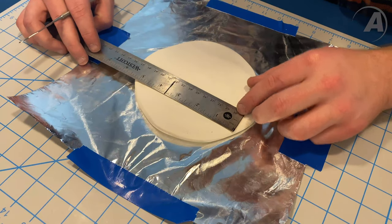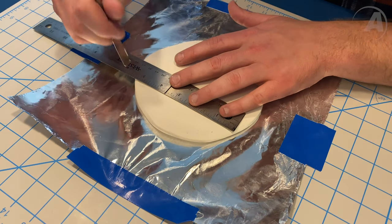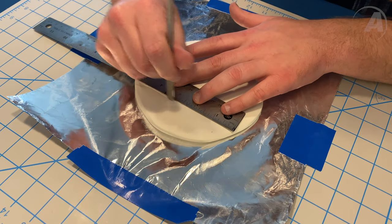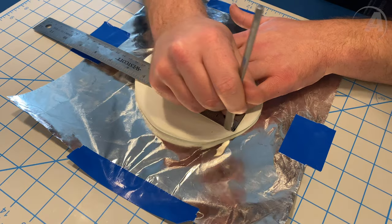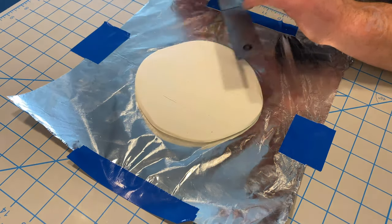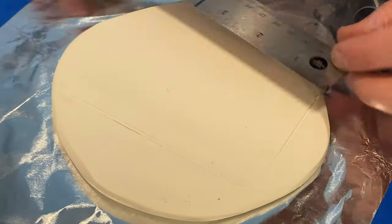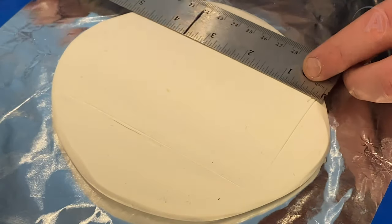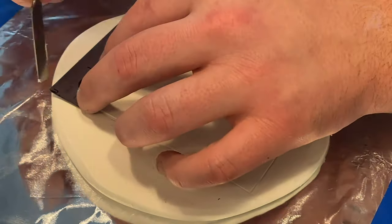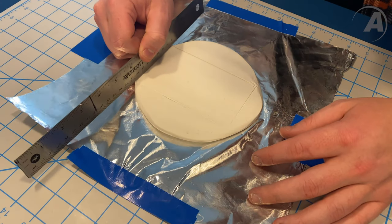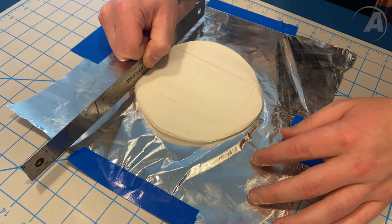Once I had the size that I needed, I used my ruler and one of our spatula tools to lay down the outline of the base. As for trimming the extra clay, that's where this metal ruler comes in handy.